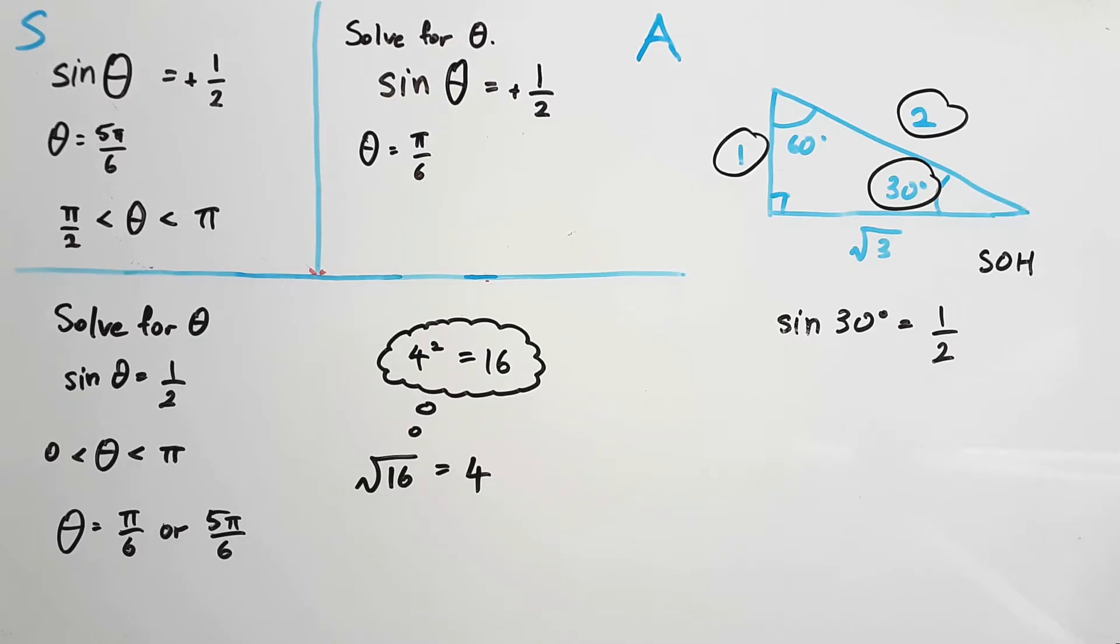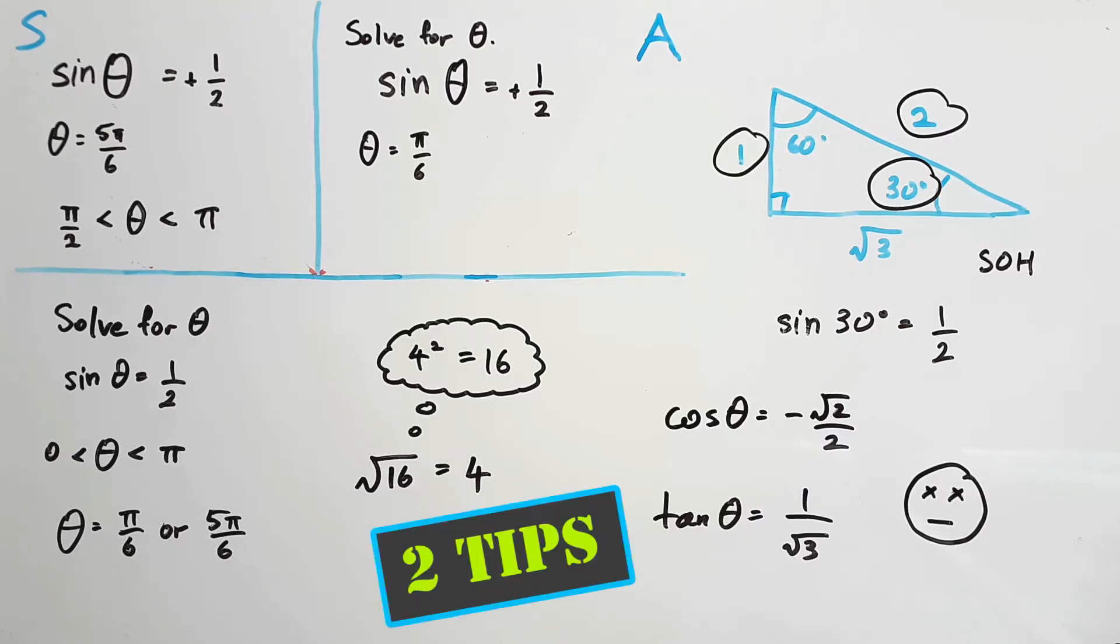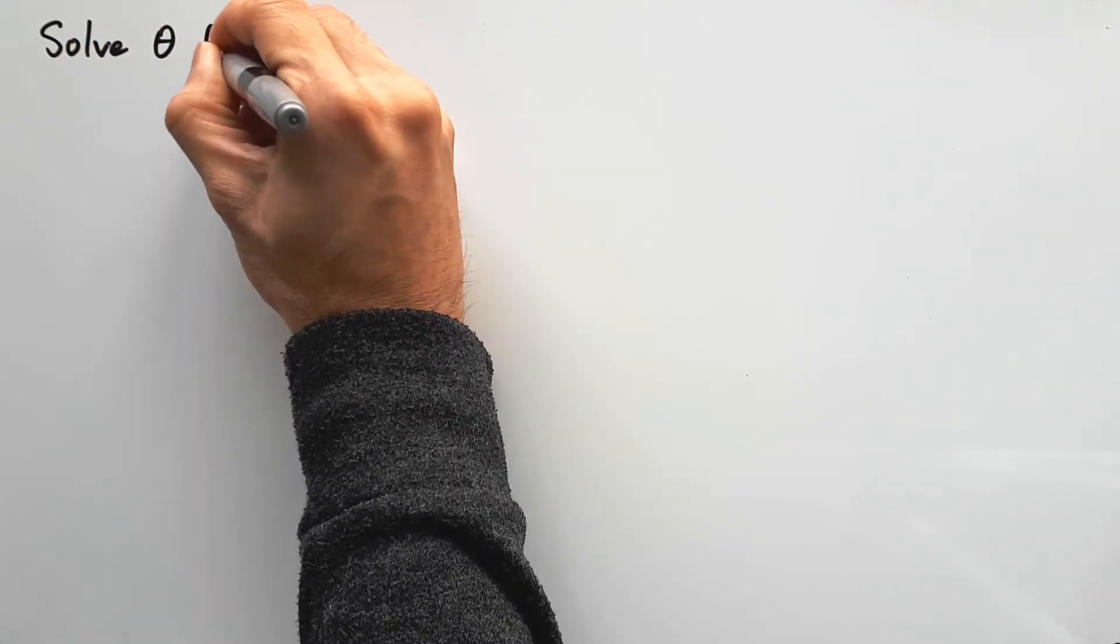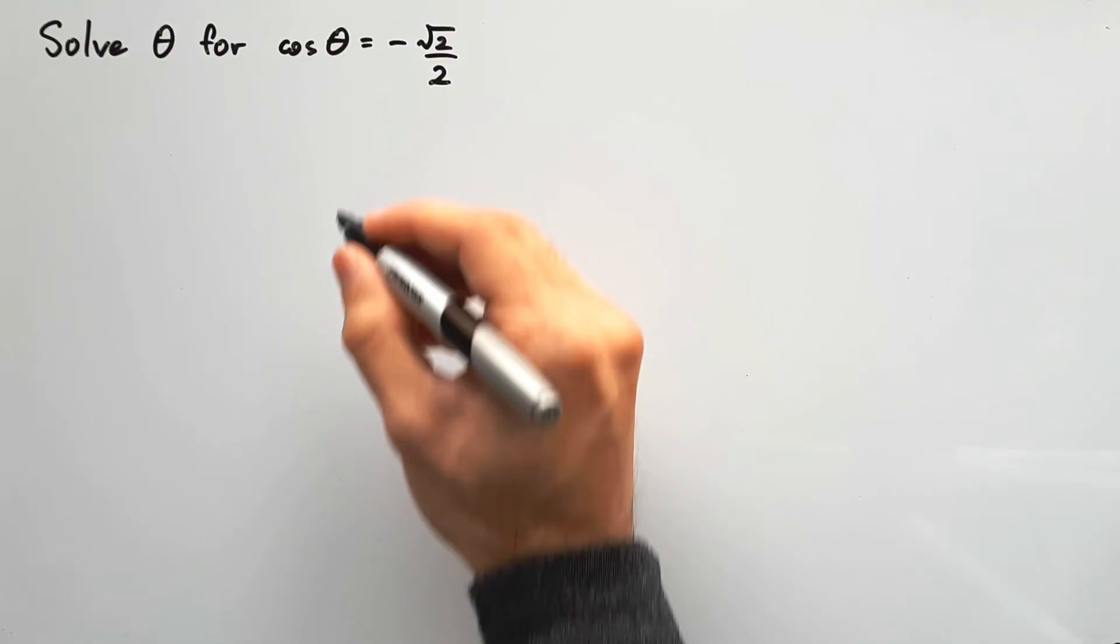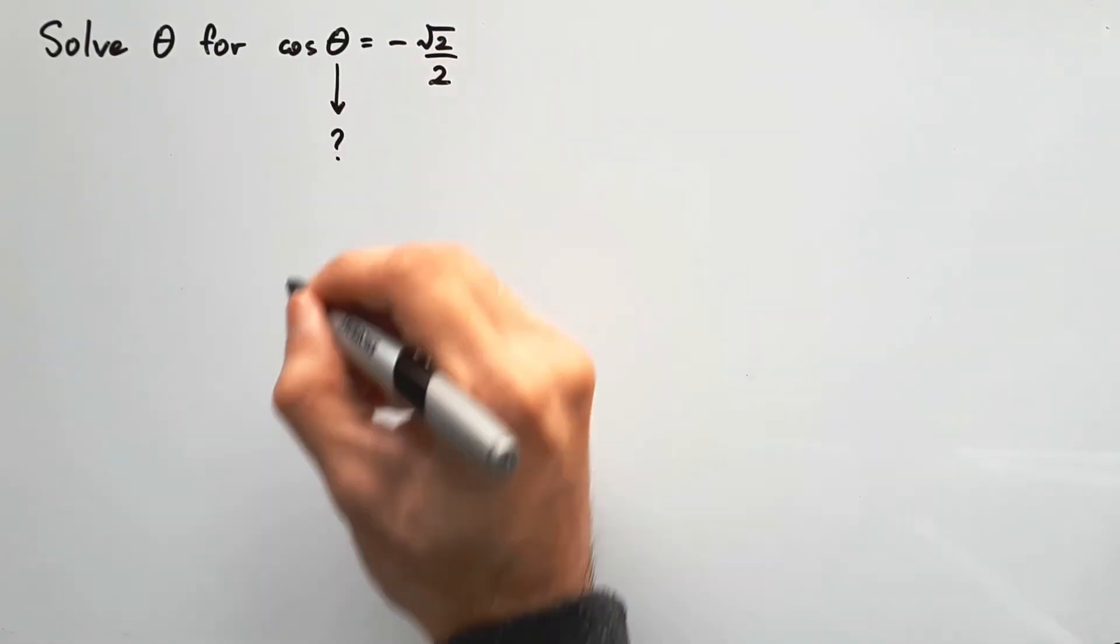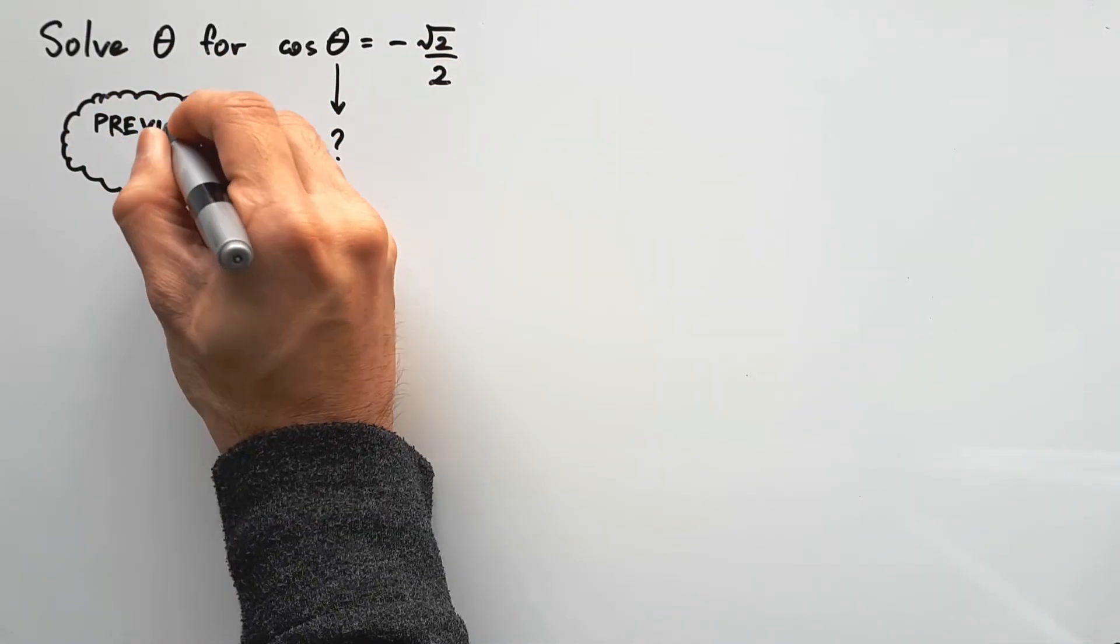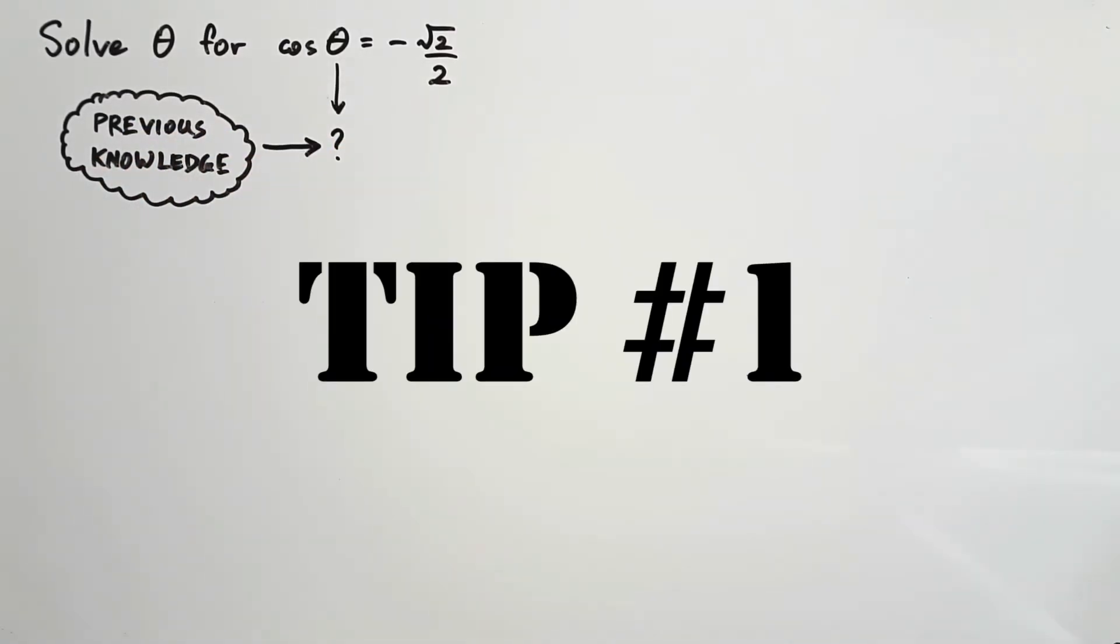Without this knowledge, it becomes infinitely more difficult to solve theta for sine, cos, or tangent equations like these. We need that previous knowledge, and there's no two ways about it. But I want to make this as easy as possible for you guys, so I'll share two tips on how to tackle these questions. Our first question is to solve theta for cos θ = -√2/2. While the question wants theta, I think the real question is what previous knowledge do we need?